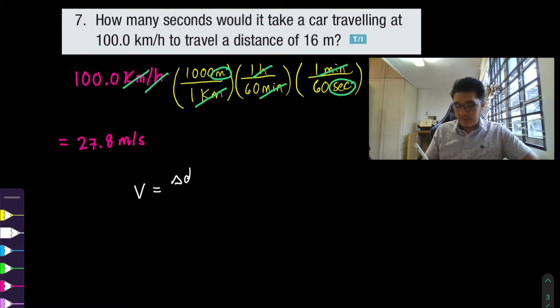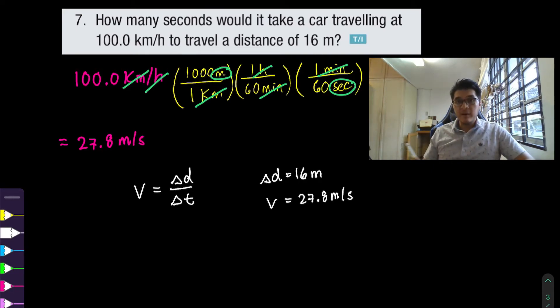So the formula that we're working with is velocity equals to the displacement over the change in time. So if they're asking us the distance traveled is 16 meters and notice here I'm not using vector signs I'm using the scalar portion of it and the speed that it's traveling at was 27.8 meters per second and to isolate for the time I just need to rearrange my equation.